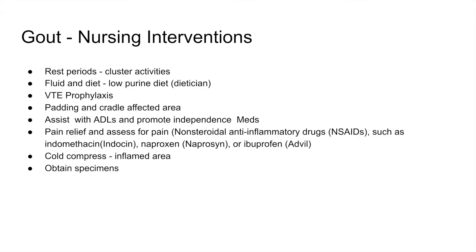Nursing interventions for gout: because the patient is in pain with swollen joints, cluster activities with rest periods in between. Maintain a low-purine diet. Implement VTE prophylaxis if immobile. Paddle and cradle affected joints. Assist with ADLs while promoting independence. Medications play a big role in pain relief and reducing inflammation. Use cold compresses on the inflamed area. Obtain specimens to monitor uric acid levels and other diagnostic lab results to confirm and manage the diagnosis.